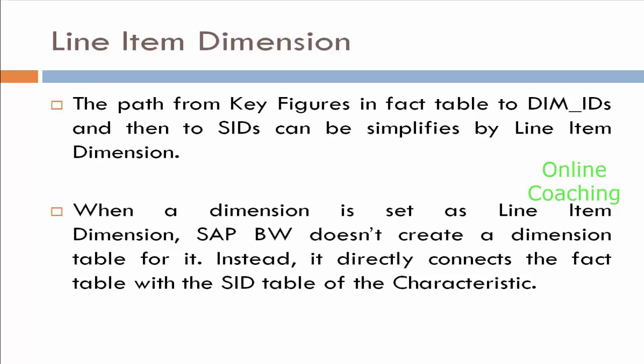What does it mean? When a dimension is set as a line item dimension, SAP BW doesn't create a dimension table. There is no slash BIC slash followed by your D followed by your info cube number, if you make it as a line item dimension. Instead of that, it directly connects the fact table with the SID table of the characteristic.